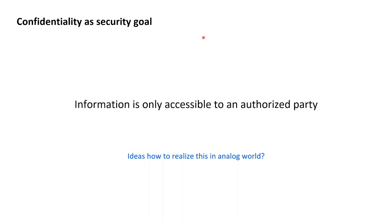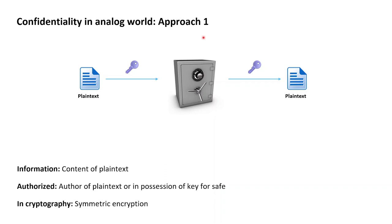This is a good moment to pause and try to think for yourself whether you can come up with ideas of systems from the analog, non-information-technical world that implement confidentiality. The first classic approach to providing confidentiality in the analog world is making use of safes with corresponding keys. Let's assume Alice wants to confidentially store a plaintext. She takes her plaintext, walks up to the safe, opens it with the key, and puts in her plaintext — at which point the plaintext is kept confidential.